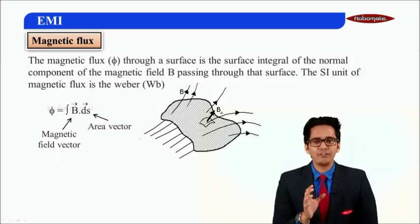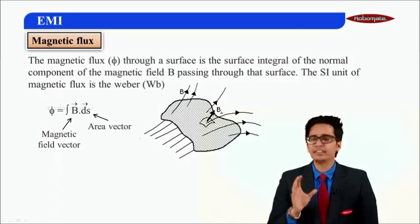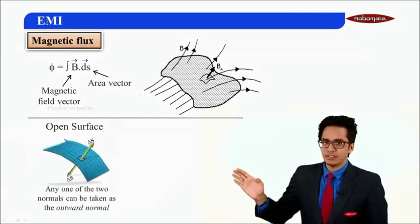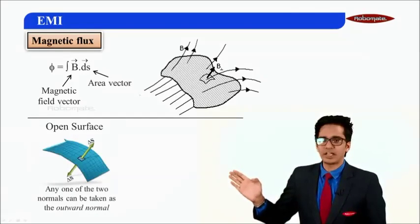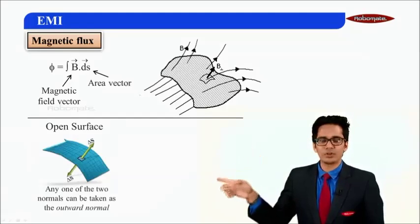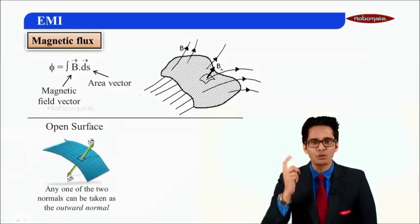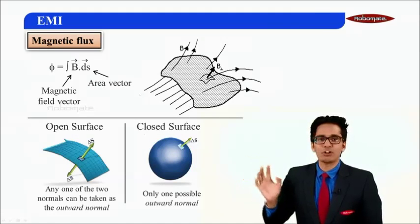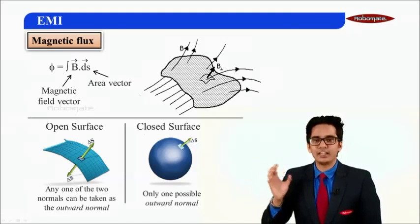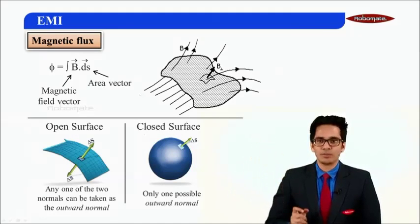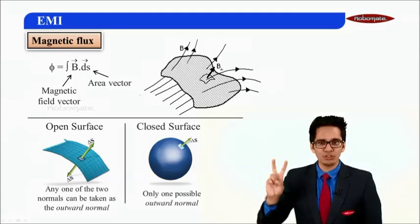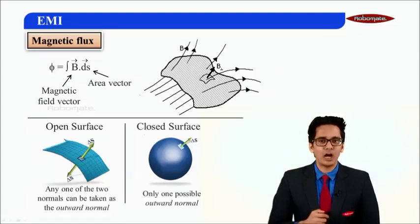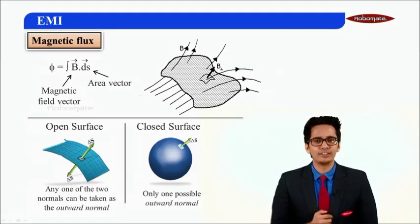B is the magnetic field vector and ds is basically the area vector. Now, if we have an open surface, the area vector can be taken either in the upward direction or in the downward direction — there are two possibilities. But if we have a closed surface, we always take the area vector as the outward normal.